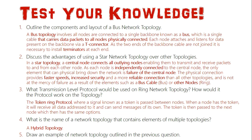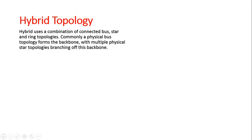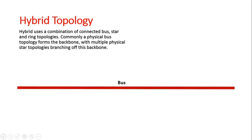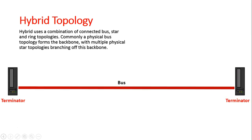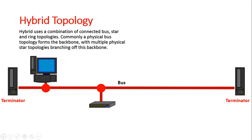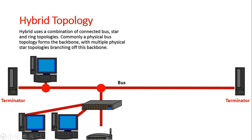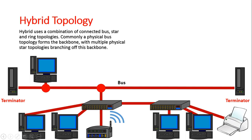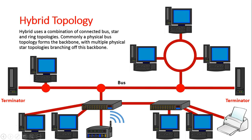Question five: draw an example of a hybrid topology. Starting with a bus line with terminators, different systems connect to it. At one point a switch connects, from which a star topology branches off with a router that has wireless capabilities allowing internet access. That switch could also connect to another switch linked to another star network. Additionally, on the bus line we might connect a ring topology with its own nodes. As long as two different topologies are visible in the diagram, it is a working hybrid topology.